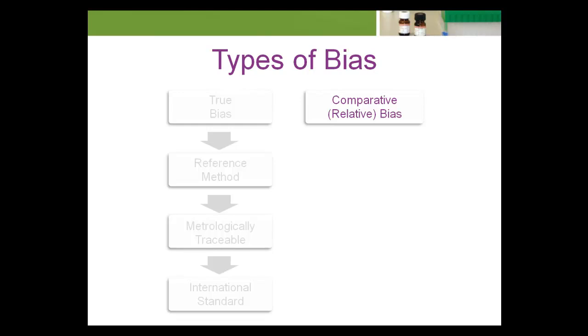Comparative or relative bias is the difference between an observed value and the calculated value of a consensus group for the same analyte. There are three types of consensus groups familiar to laboratories participating in control-vendor interlaboratory comparison or proficiency testing programs.